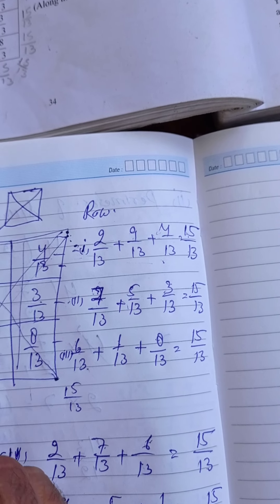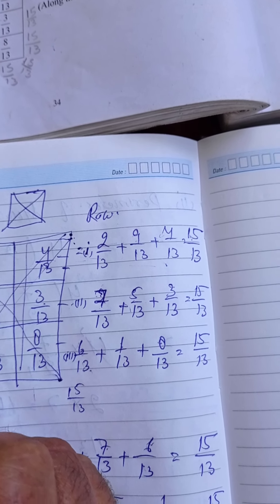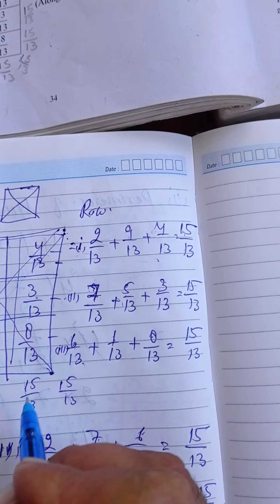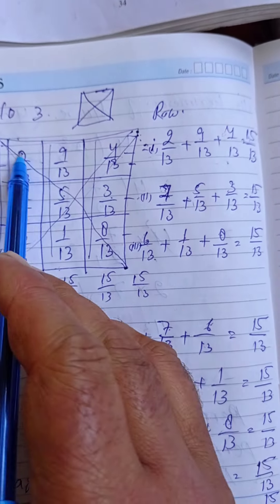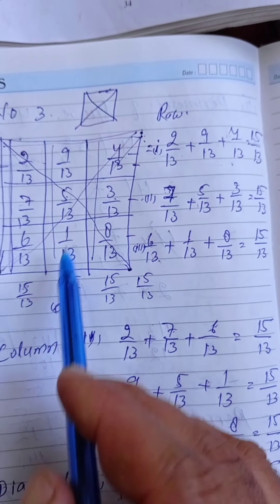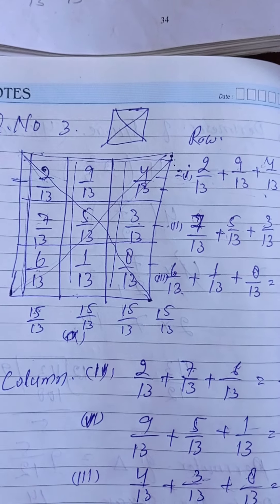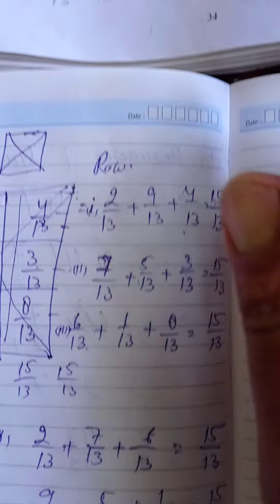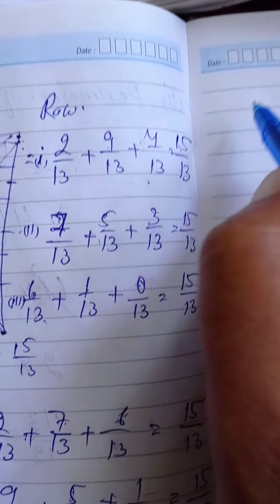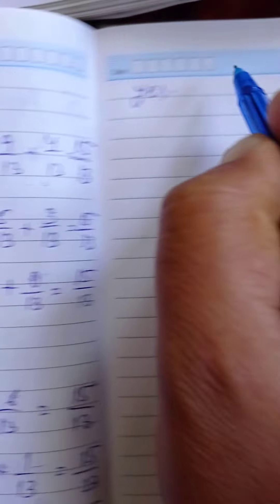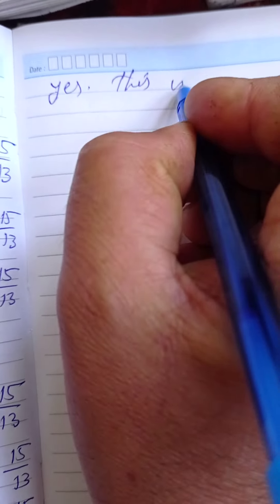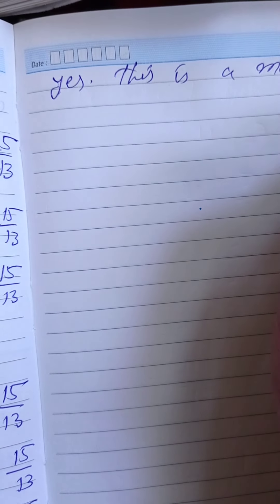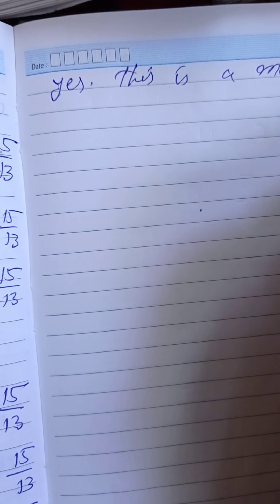All three rows, all three columns, and both diagonals give the same sum of 15/13. So the answer is: Yes, this is a magic square, because every side gives the same sum.